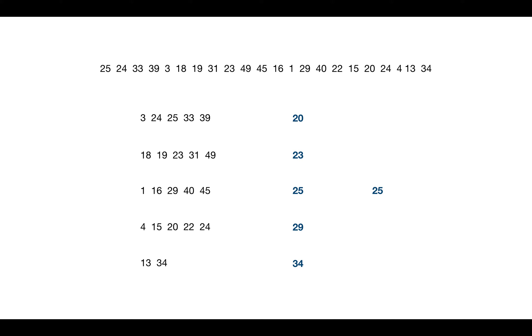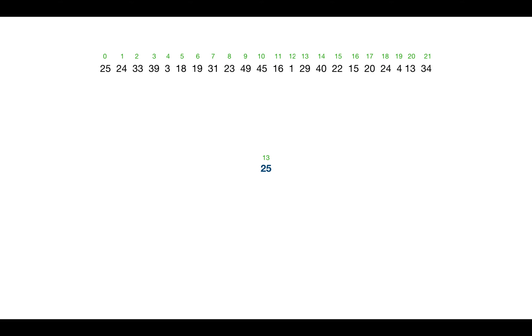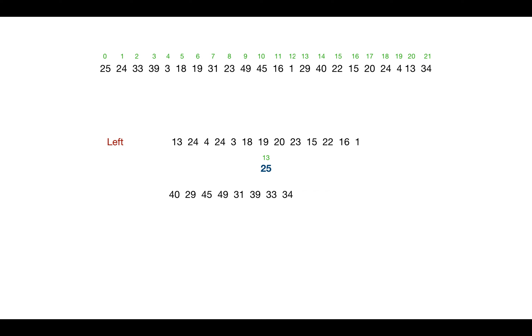We find 25 as the median of medians and use it as the pivot. After one iteration of sorting, 25 lands at index 30. Since the array runs from index 0 to 21, the median is at index 11 — 25 is definitely not the median. We look at the left half and the right half relative to 25; since index 11 is to the left, we now apply the same procedure to the left subarray.